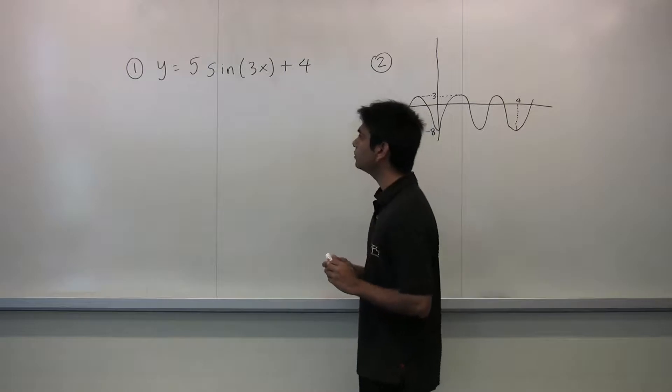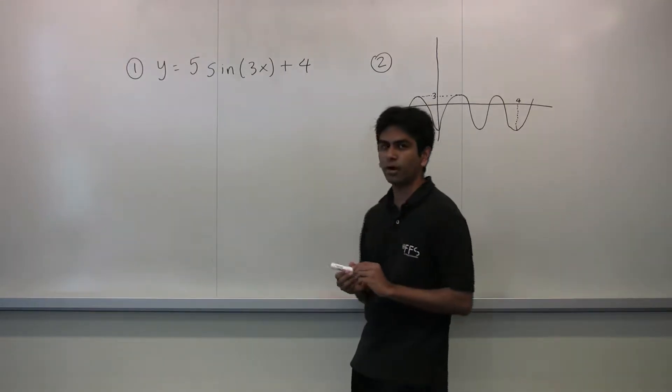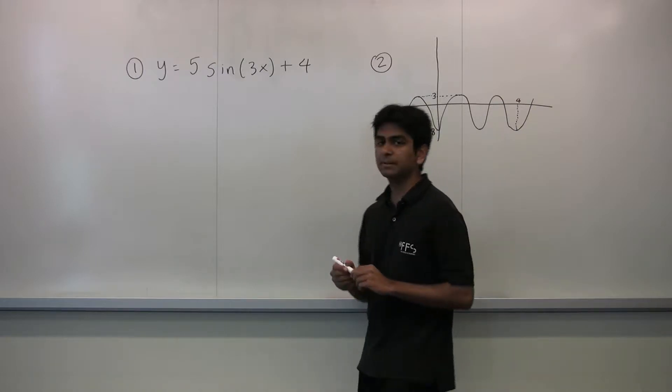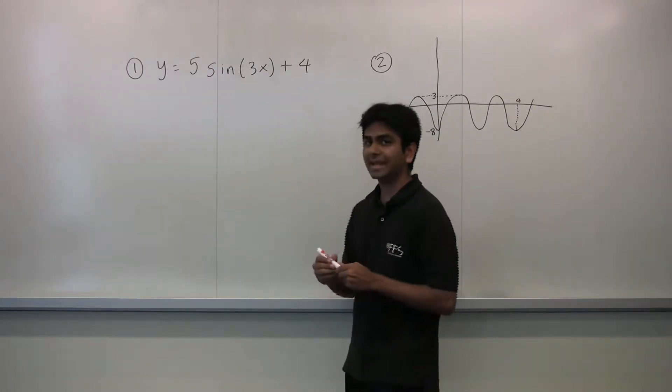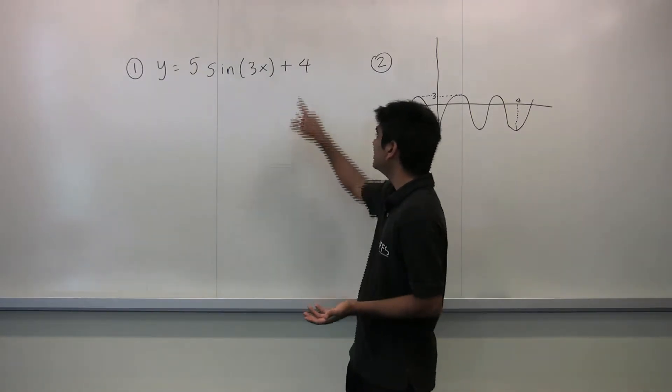In the first example, we have to graph y equals 5 sine of 3x plus 4. We have to keep in mind our a, b's, and c's. Our amplitude, meaning a, is 5, our b is 3, and our c is 4.